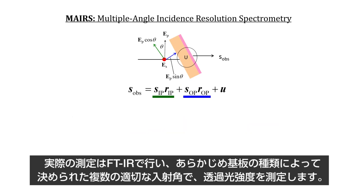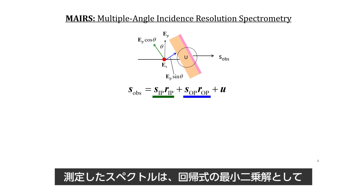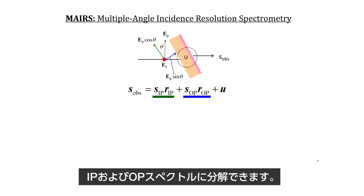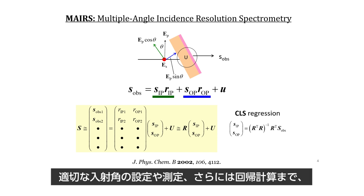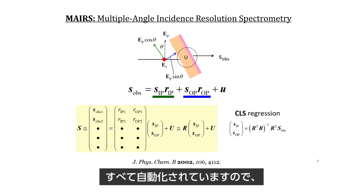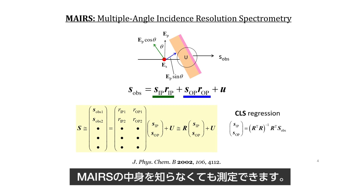The actual measurements are performed on FTIR, and the light intensity is measured at different angles of incidence that are specifically determined a priori, depending on the substrate of the sample. The collected spectra are decomposed to have the IP and OP spectra as the least-squares solution of the regression equation. The collection of spectra at specific angles and the calculation are both performed automatically. Therefore, you can use MERS as a black box.